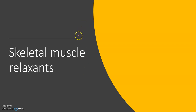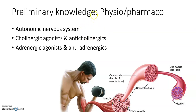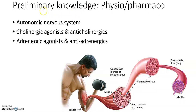We're going to talk about skeletal muscle relaxants. Before learning about neuromuscular blockers or skeletal muscle relaxants, we need to know some basic autonomic nervous system physiology. We have to revise cholinergic agonists, anticholinergics, adrenergic agonists, and anti-adrenergics — all of which will be useful to understand this topic.